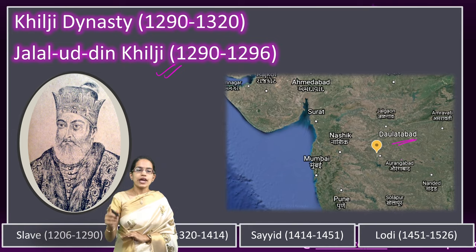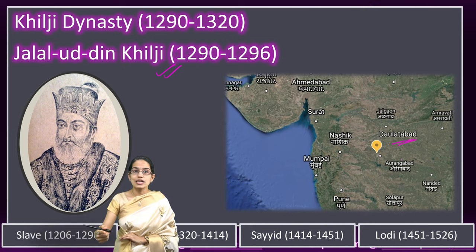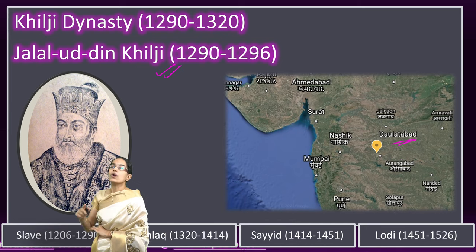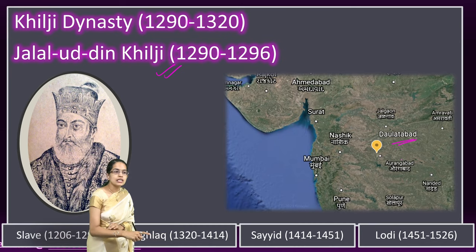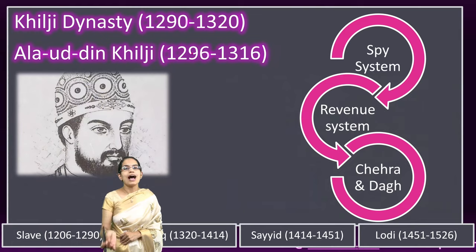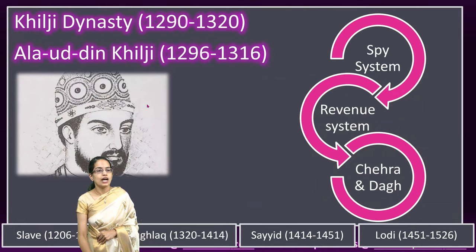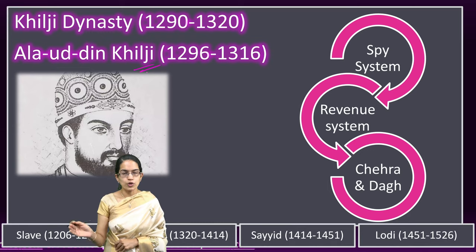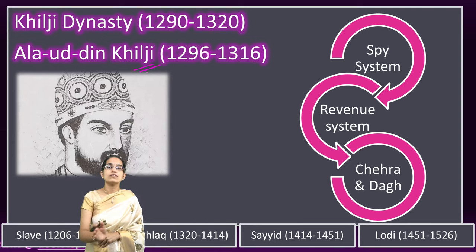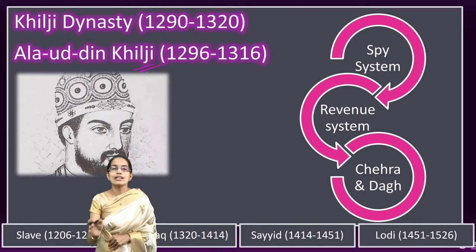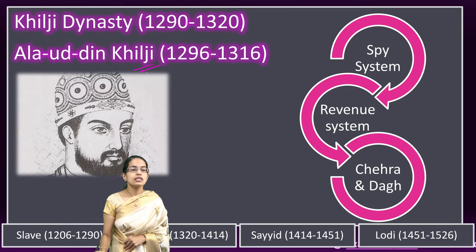Alauddin Khilji was one of the most popular and well-known leaders of the Khilji dynasty. When Jalaluddin wanted to congratulate Alauddin Khilji, his son-in-law and nephew, at that point Alauddin Khilji killed Jalaluddin and rose to power. He had raided the fort of Daulatabad, returned to Jalaluddin with lots of wealth, and was ultimately responsible for killing Jalaluddin — after which Alauddin Khilji rose to power.